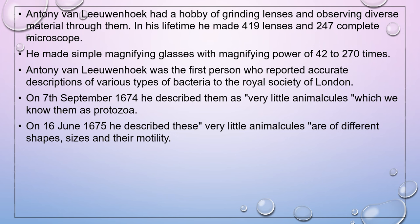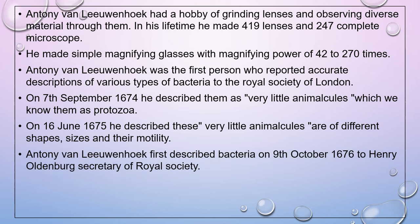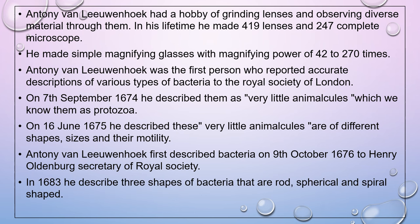On 16th June 1675, he described these very little animalcules as having different shapes, sizes and patterns of motility. Antony Van Leeuwenhoek first described bacteria on 9th October 1676 to Henry Oldenburg, Secretary of the Royal Society, London. In 1683, he described three shapes of bacteria: rod, spherical and spiral shape. He died in 1723.